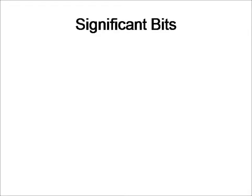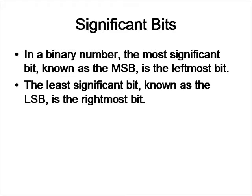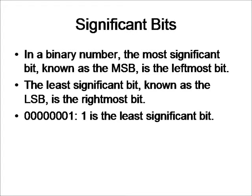For significant bits there are only two things that you need to know. You need to know the most significant bit and the least significant bit. In a binary number the most significant bit, known as the MSB, is the leftmost bit and the least significant bit, known as the LSB, is the rightmost bit. So for example in this problem here the 1 in this binary number is the least significant bit.